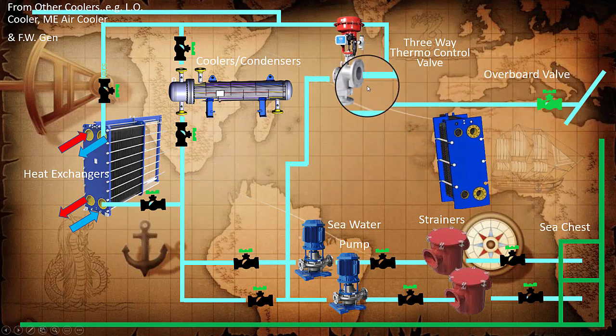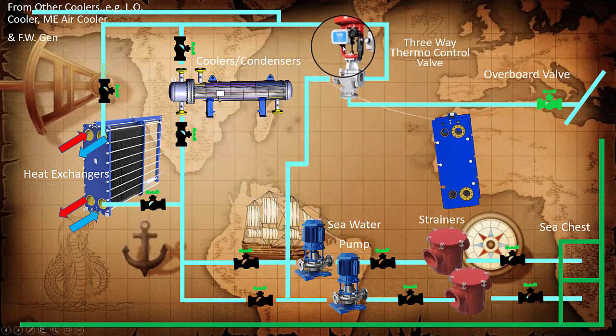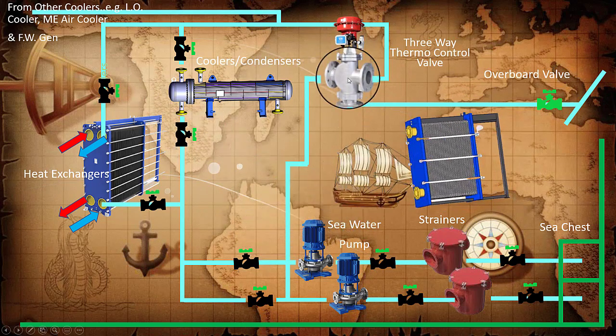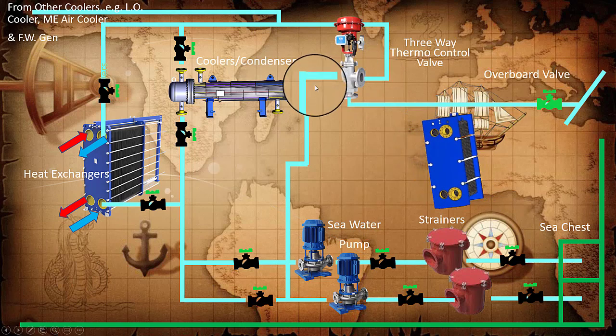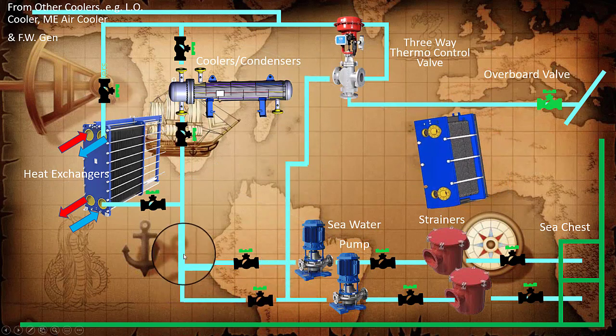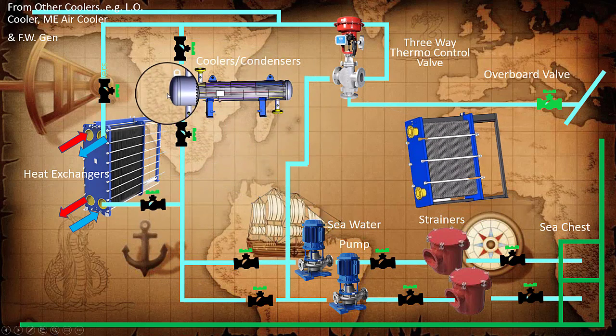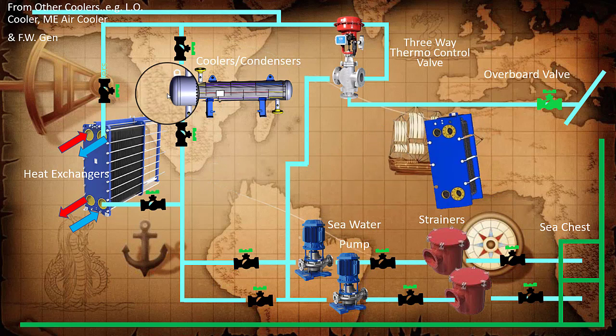As you can see through the lines, it supplies to the heat exchangers or coolers or condensers. It goes out and goes to the open cycle or overboard valve. If the temperatures have been met through the settings of the three-way thermocontrol valve, or mixing valve, it can also recirculate back. It will pump in and it loops in. This is the explanation of seawater cooling.